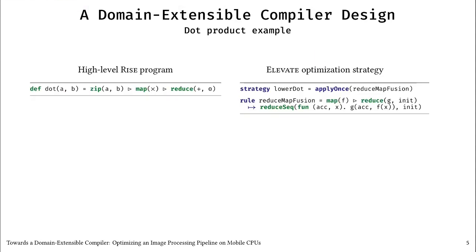I will now illustrate how compilation works with a dot product example. The dot product is defined on the top left as combining two input arrays, A and B, with ZIP, to then multiply pairs of elements using MAP, and finally summing the result using REDUCE. You can read the little triangle as THEN, so ZIP, then MAP, then REDUCE. It is syntactic sugar for function application and function composition.